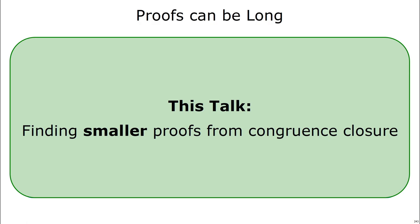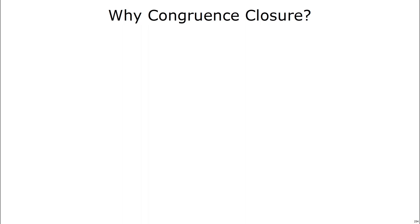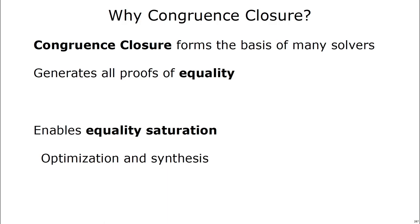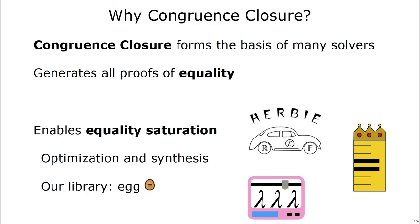In this talk, I'll be talking about getting smaller proofs, and in particular, getting smaller proofs from congruence closure. So why congruence closure in particular? Well, congruence closure forms the basis of many solvers. It's a critical piece of the solver because all proofs of equality go through congruence closure. It's the main way that solvers talk about what things are equal to what. Our favorite application of congruence closure is equality saturation, and this is a technique for optimization and synthesis of programs. At the University of Washington, we work on a library called EGG, which allows you to perform equality saturation across a variety of domains. We use it in a few research projects in order to optimize programs and synthesize all sorts of interesting things.